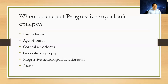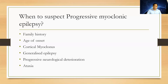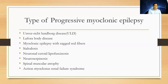It may or may not be associated with generalized epilepsy, and there is progressive neurological deterioration; some patients can have ataxia. If there is a combination of symptoms — positive family history, young age of onset, cortical myoclonic epilepsy, and progressive neurological deterioration — we should think of PME. Then what are the causes of progressive myoclonic epilepsy?